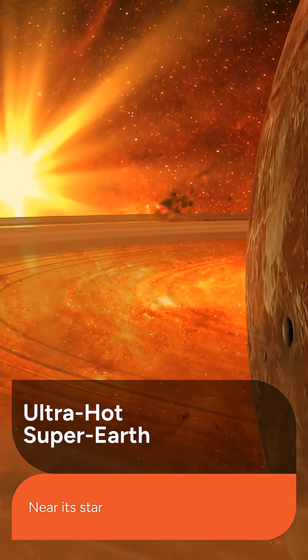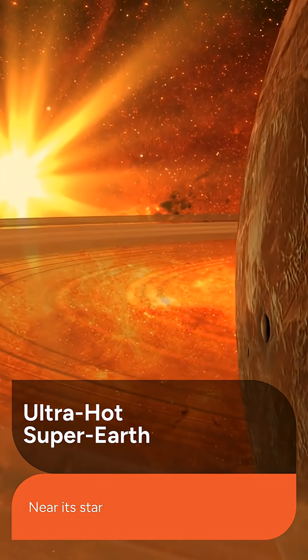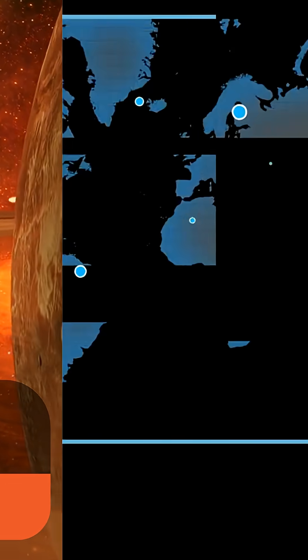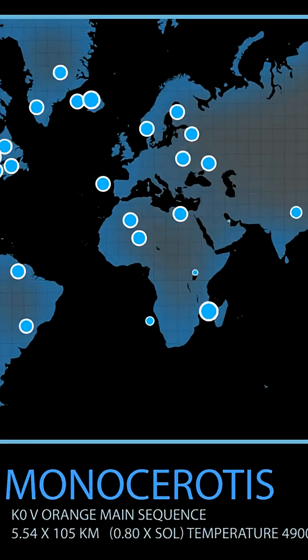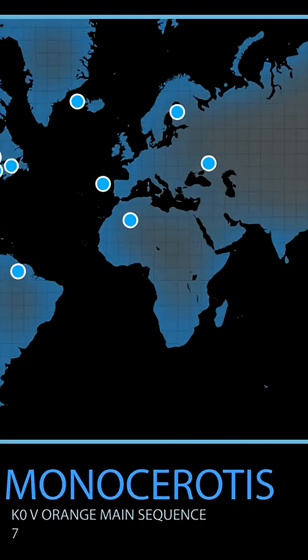TOI 561b is an ultra-hot super-Earth orbiting incredibly close to its host star, a distance less than one million miles. This proximity to its star results in extreme conditions, far exceeding the melting point of typical rock on its permanent dayside.